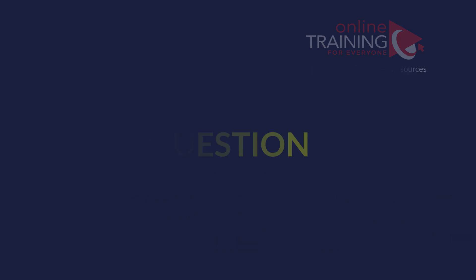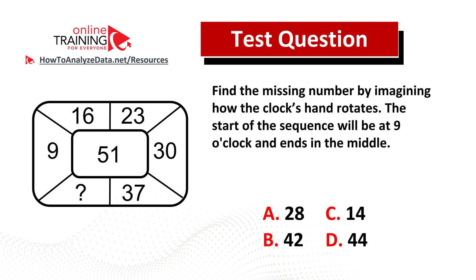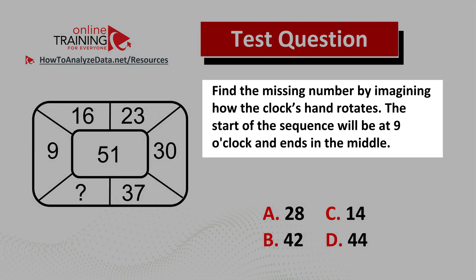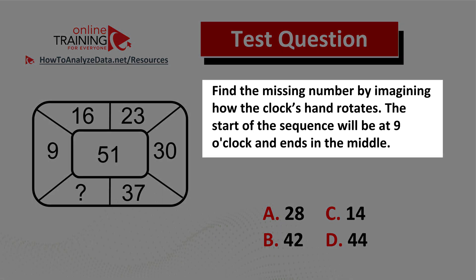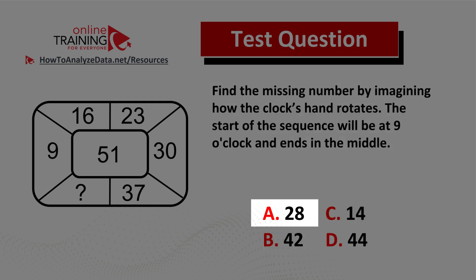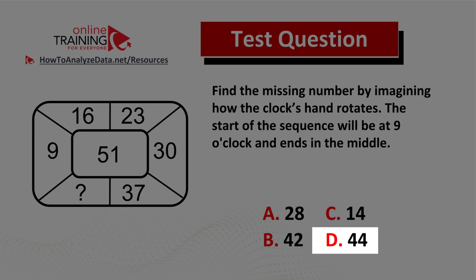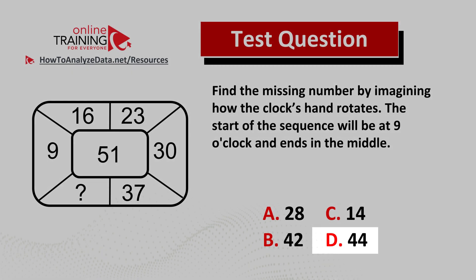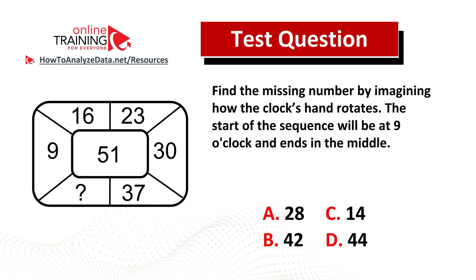Some of you might find this question tricky, but regardless of whether you can solve it on your own or not, you will be excited to learn the solution to this real-life assessment test question. Find the missing number by imagining how the clock's handle rotates. The start of the sequence will be at 9 o'clock and it ends in the middle. You have 4 different choices: Choice A: 28, Choice B: 42, Choice C: 14, and Choice D: 44. Now might be a good time to pause this video.